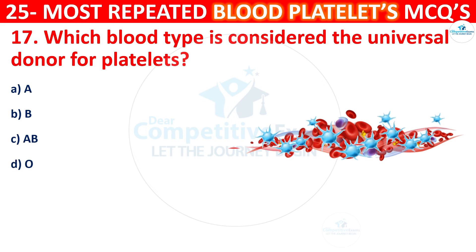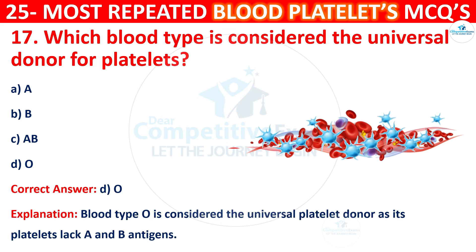The correct answer is D, that is O. Blood type O is considered the universal platelet donor as its platelets lack A and B antigens.